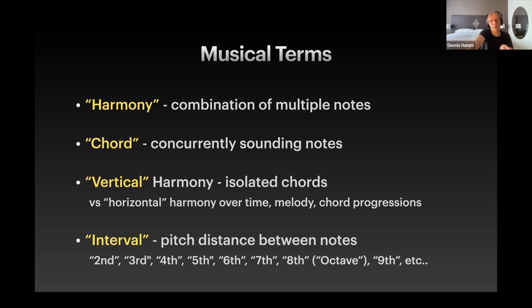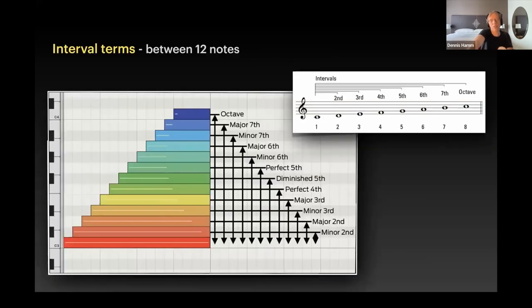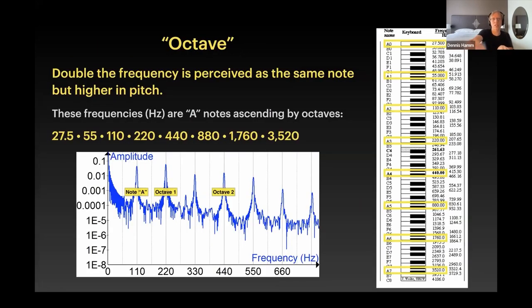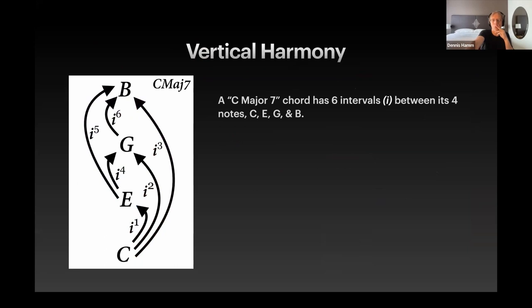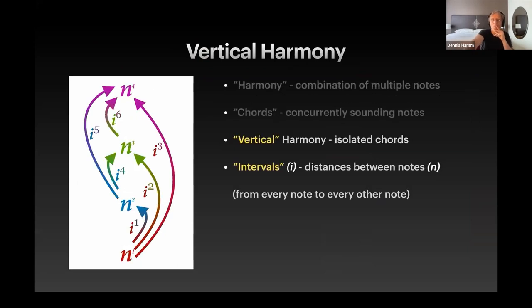A second, a third, a fourth, a fifth, a sixth, seventh, eighth, which is an octave. They have also more precise names when you get into some of these intervals between all twelve notes. But again, the octave is the exact same perceived pitch or same perceived note an octave higher. So here's, those are all A's on the piano. Also, the frequencies are doubled. So if this is 110, this is 220, this is 440, 880, 1760. So vertical harmony is isolated chords, intervals, distances between notes.